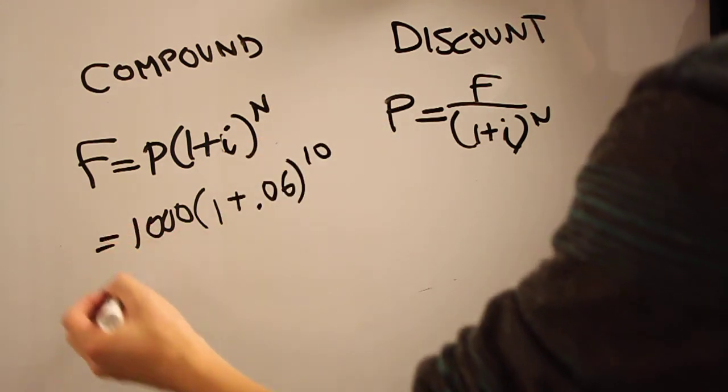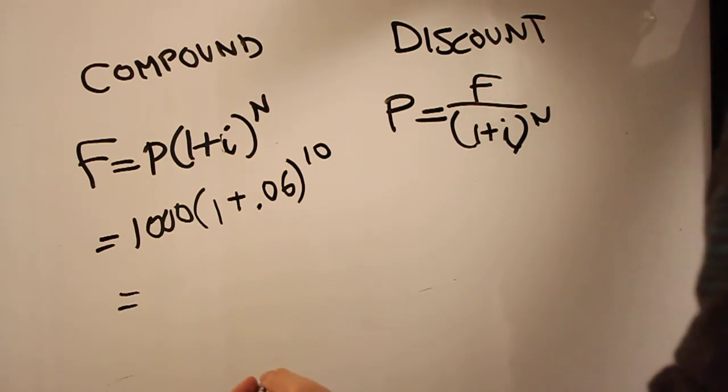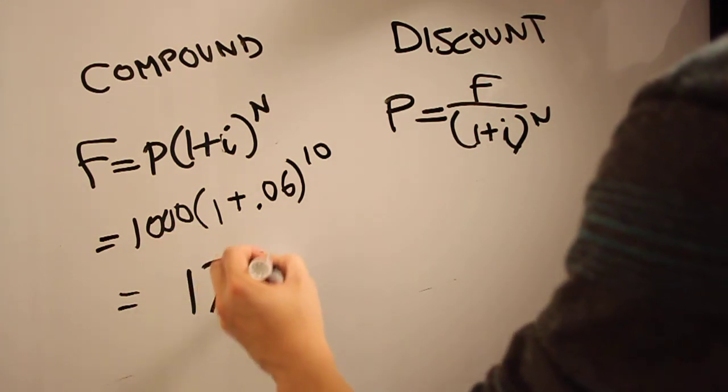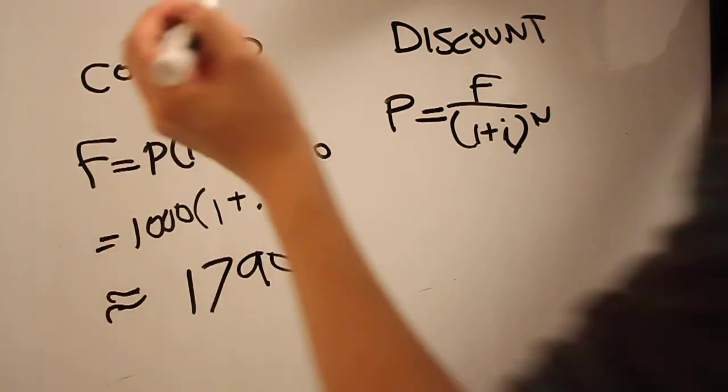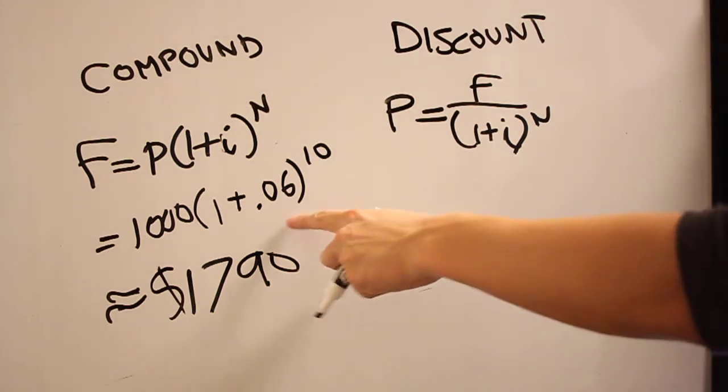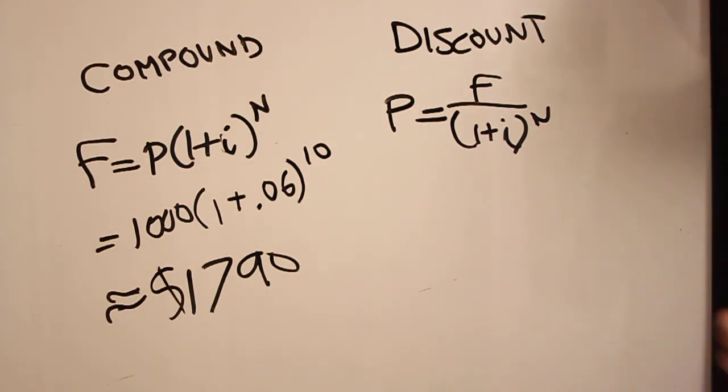Let's say you want to do it over 10 years. That F is going to equal $1,790, about that much. I'm not doing that in my head, don't worry. So you make $790 in 10 years, which is not bad for that low of an interest.